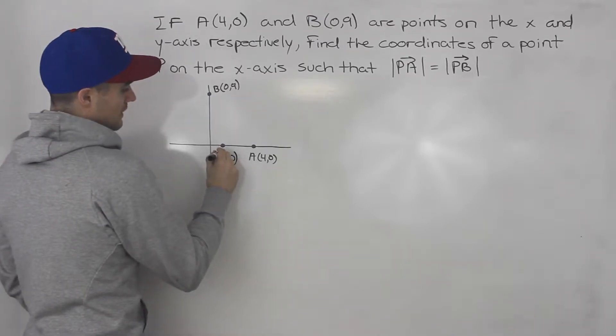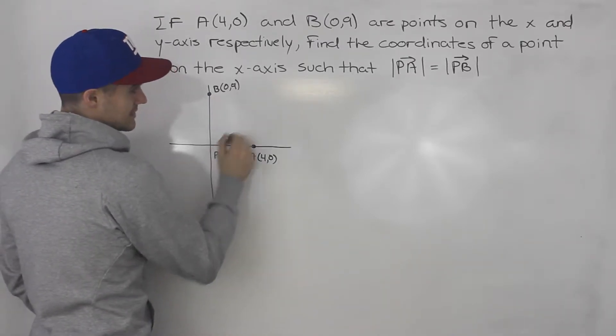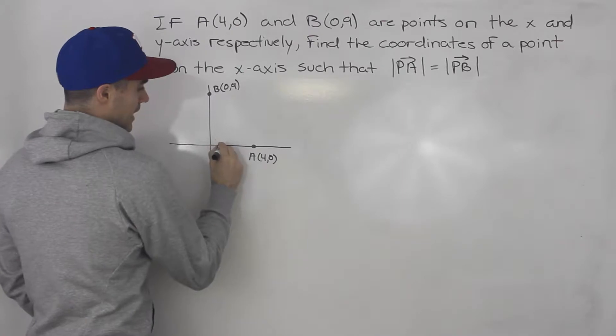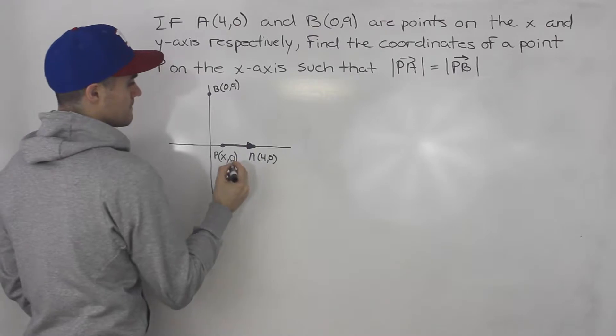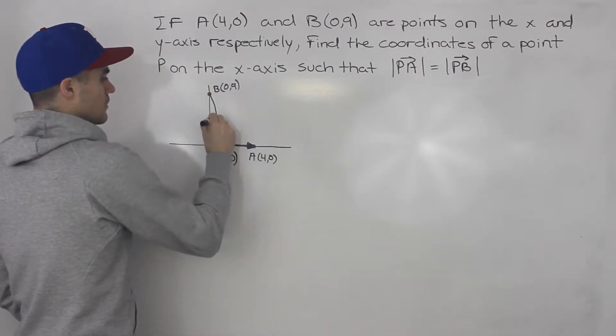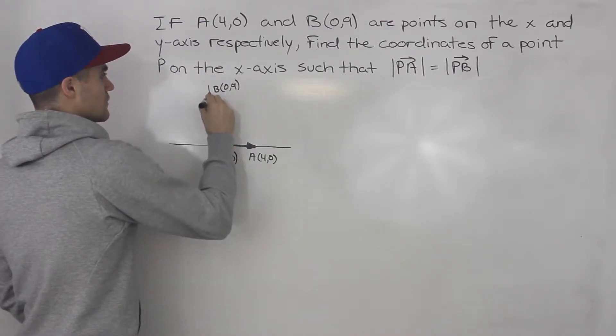We have to find this point P such that the magnitude of vector PA, the magnitude of this vector right there, is going to equal the magnitude of this vector here.